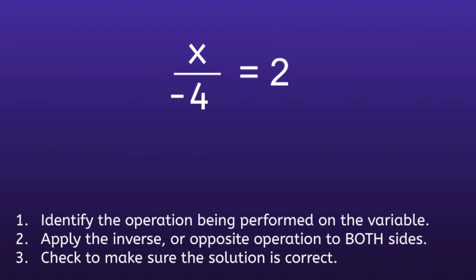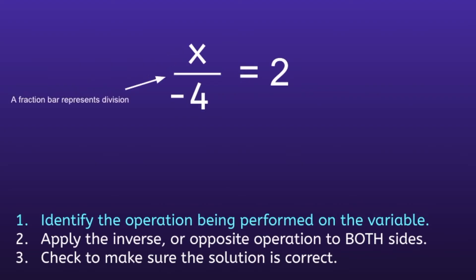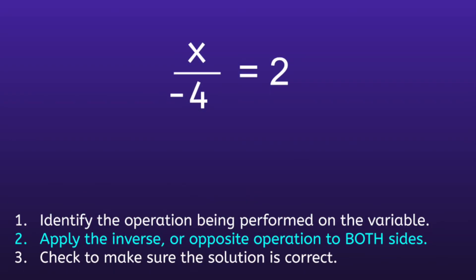Example 2: x over negative 4 equals 2. Step 1 is to identify the operation being performed on the variable. The variable is x, and the fraction bar means division, so we have x being divided by negative 4. This moves us to Step 2, where we want to do the opposite operation to both sides. What is the opposite of dividing by negative 4?